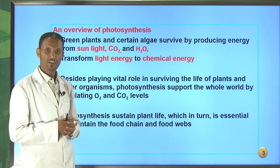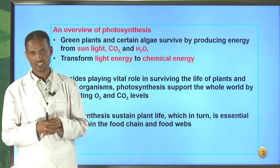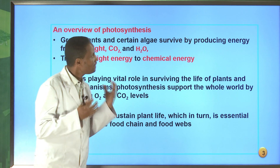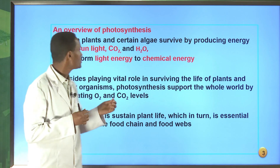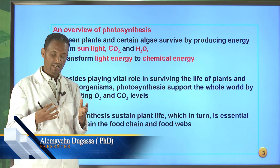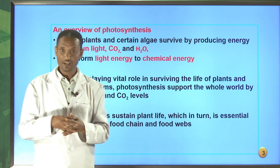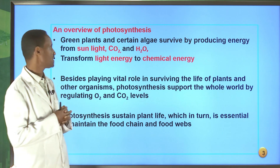Let me give an overview of photosynthesis. Photosynthesis is very important for life on our planet because by this process, solar energy can be captured and changed into chemical energy. In this process, plants and certain algae survive by producing energy from sunlight and carbon dioxide, also water, because green plants and certain algae have chlorophyll or some pigments which are able to capture solar energy and transform it into chemical energy.